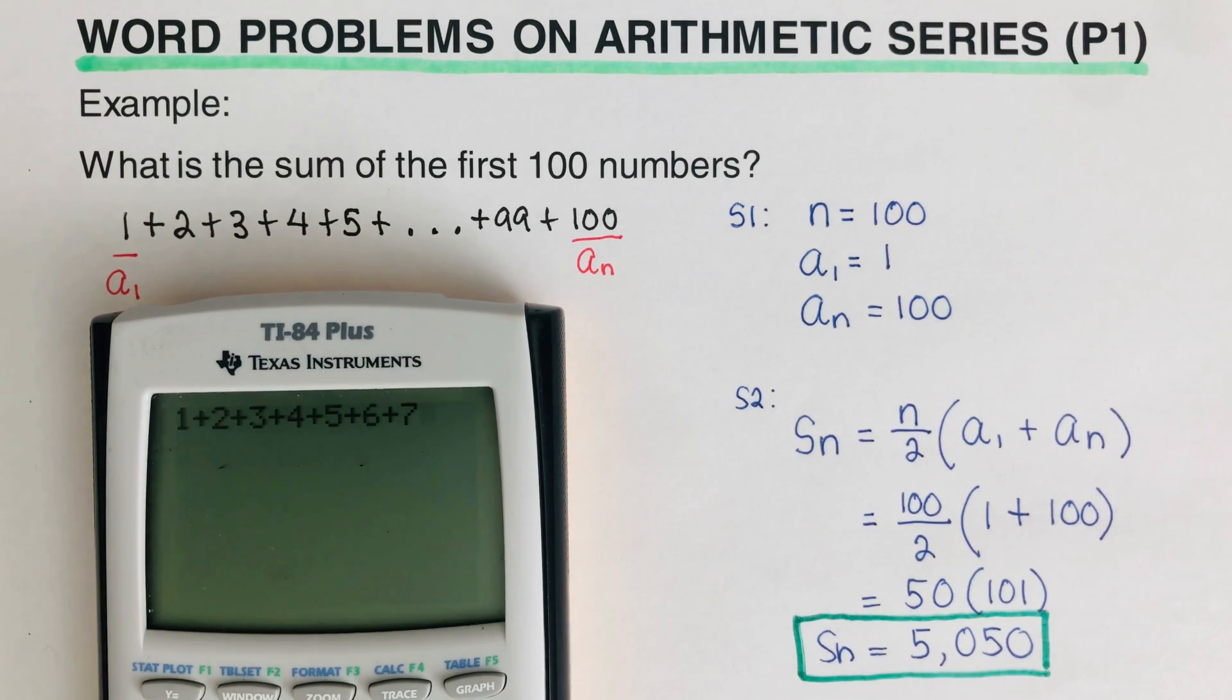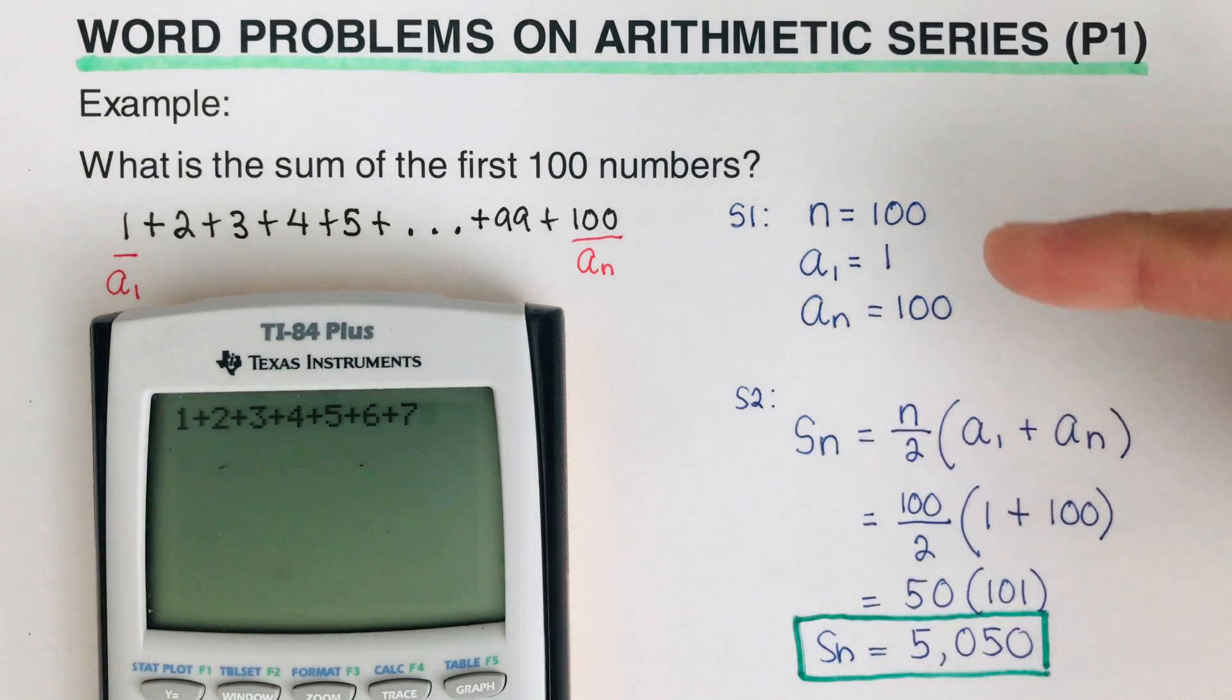Now if the problem is asking us to get the sum of the first 1,000 numbers—so that means that's 1 plus 2 plus 3 plus 4 all the way to plus 1,000—that would be a lot of work if you use the calculator. These steps that we have here and this formula that we have here will make math faster and easier.